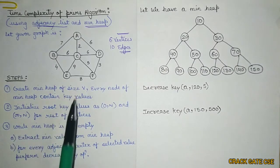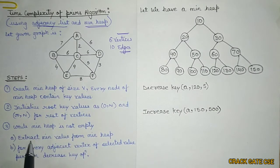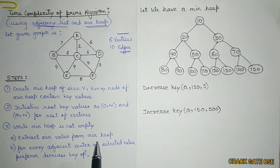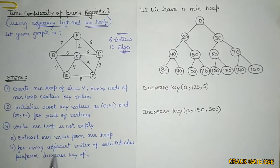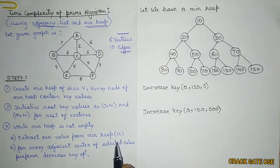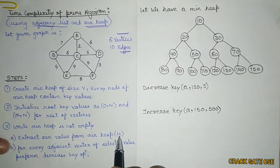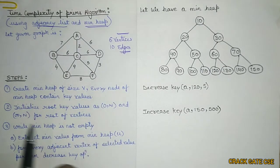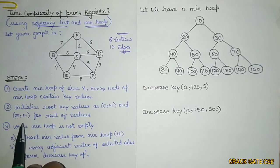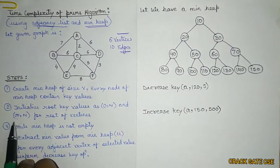The two steps to repeat are: first, extract the minimum value from the min heap — just as in Prim's algorithm we always extract the minimum edge weight. Second, for every adjacent vertex of the selected vertex (say u), we perform the decrease key operation, because we initialize values as infinite, and whenever we visit a new vertex, the new cost will be less than infinite, so we apply the decrease key operation.